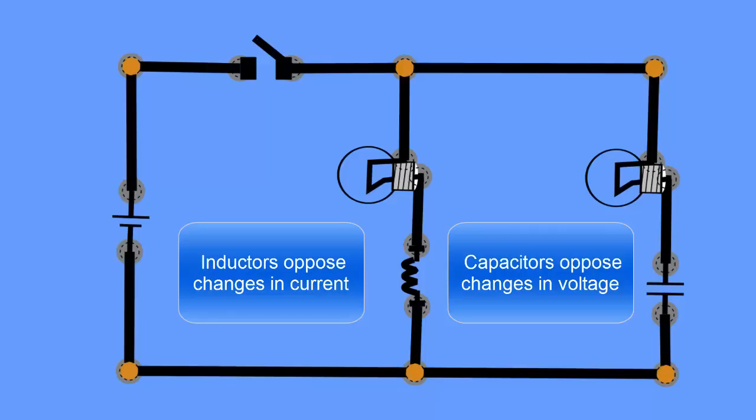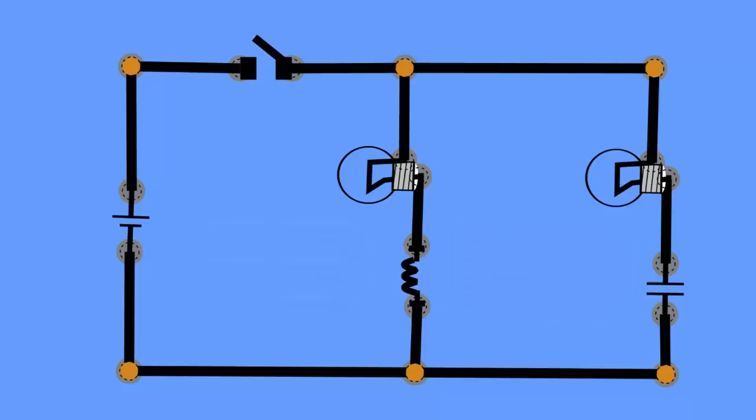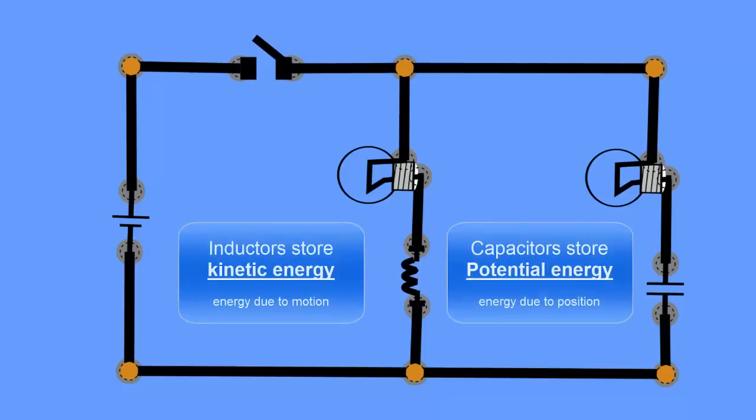The other thing we want to look at is that they both store energy. The capacitor stores potential energy and the inductor stores kinetic energy. Inductors store energy due to the movement of electrons, while capacitors store energy in the position of electrons on the plates.